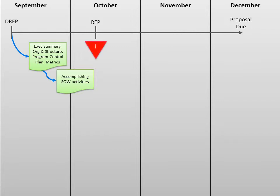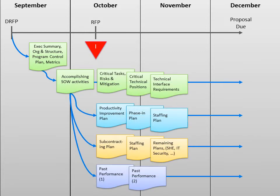Hold the first red team for the first approximately 40 pages of material before moving on to the rest. Large proposals will probably require multiple parallel efforts, with each thread led by one or more core team members. Hold periodic red teams to review new material only, keep the size of the content to a minimum, and build off of prior reviews. The gold team will review the integrated proposal.